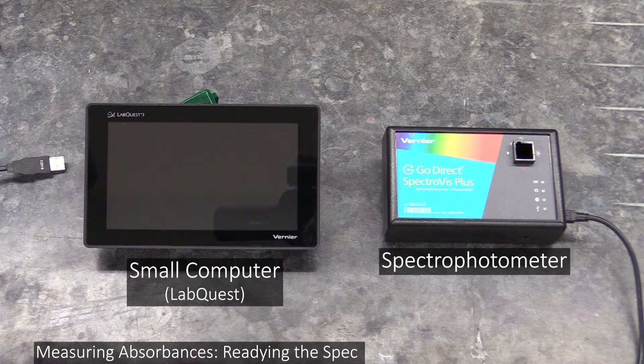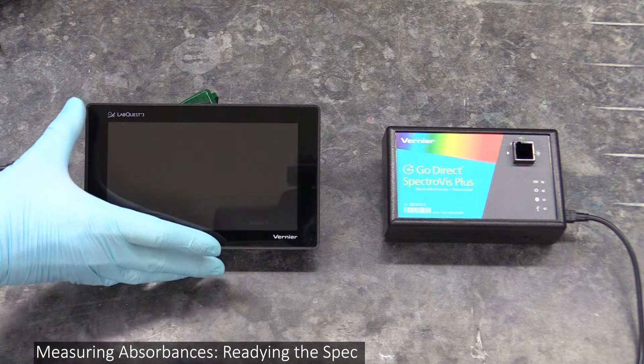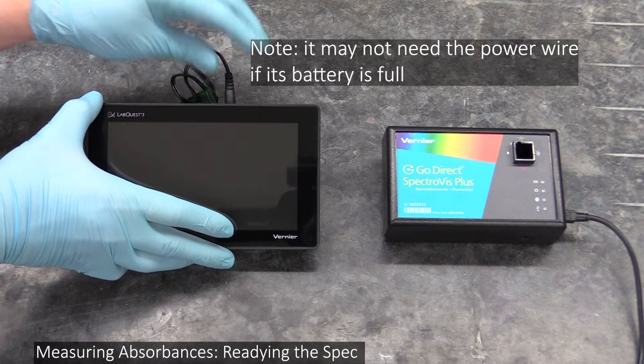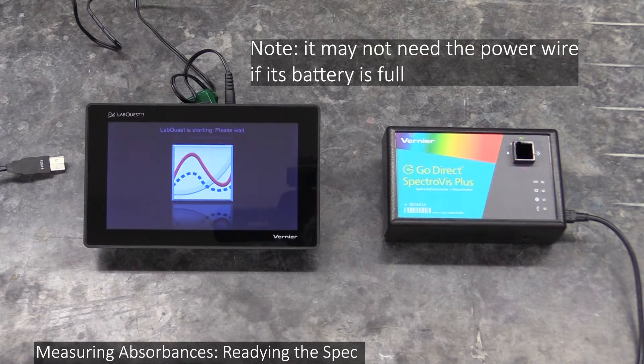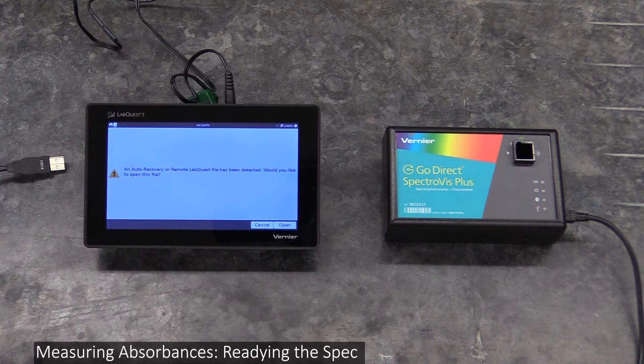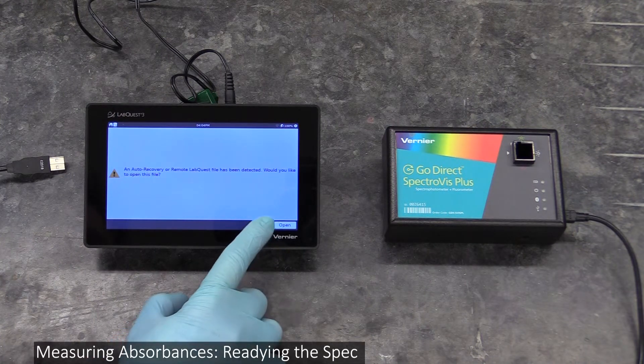Before you can use your spectrophotometer to measure anything, you have to calibrate it. Start by plugging the computer's power wire in and turning it on. If it asks you about an auto recovery file after it boots up, just press cancel.